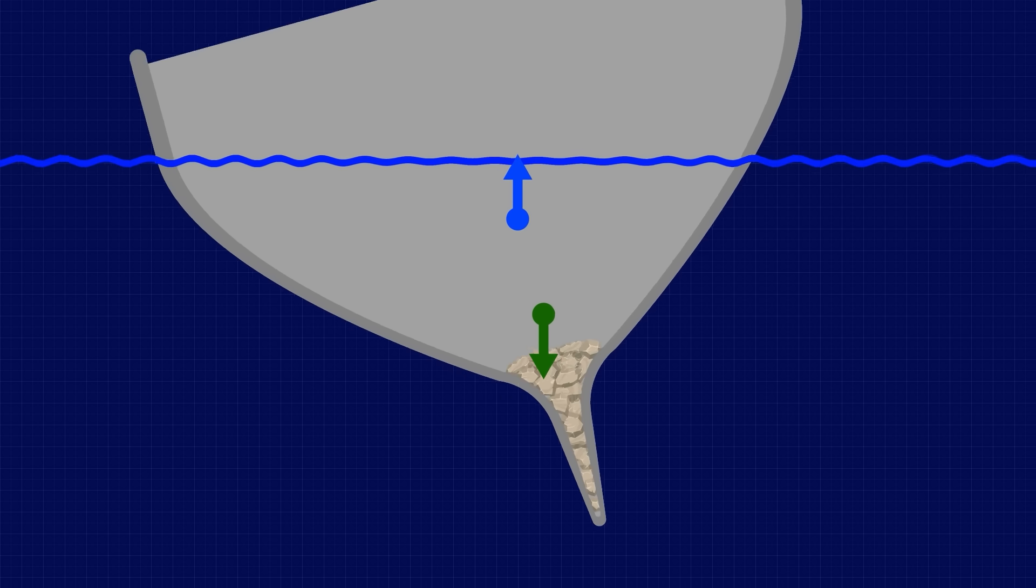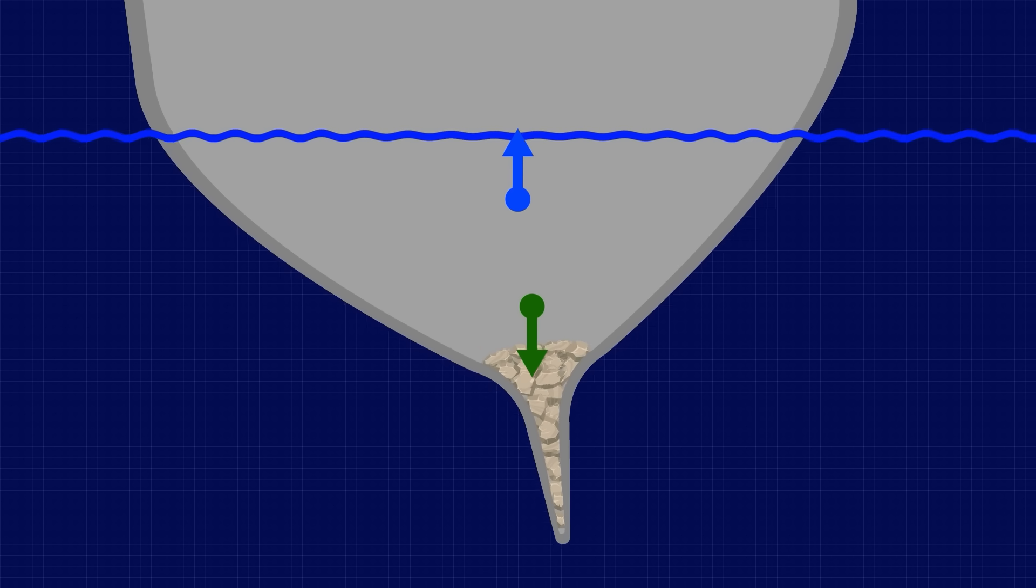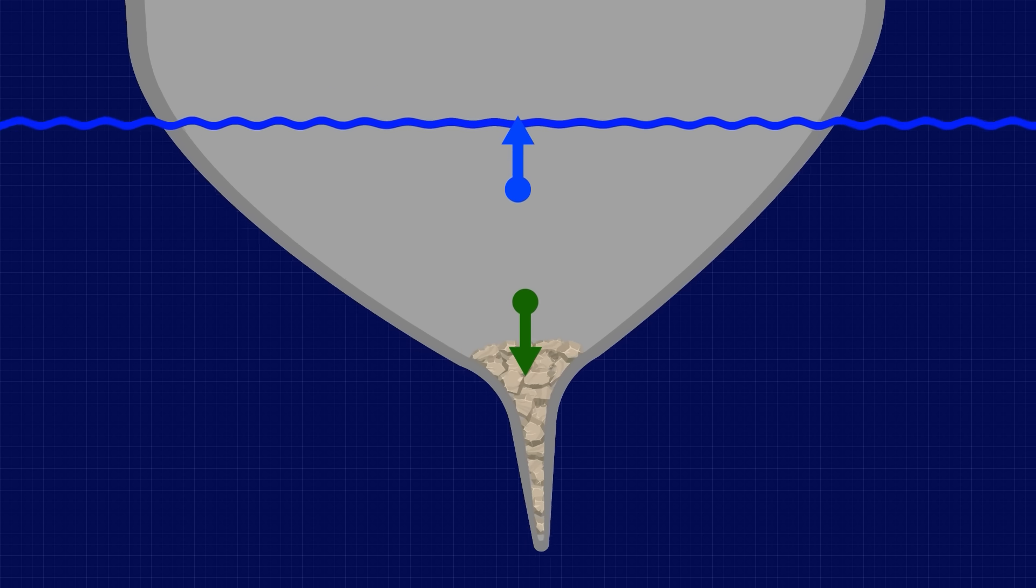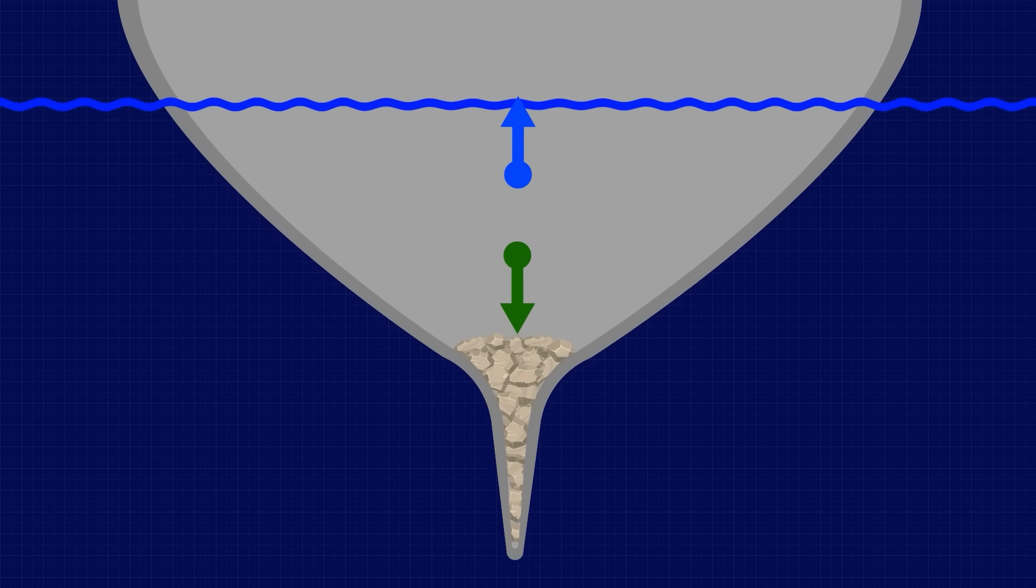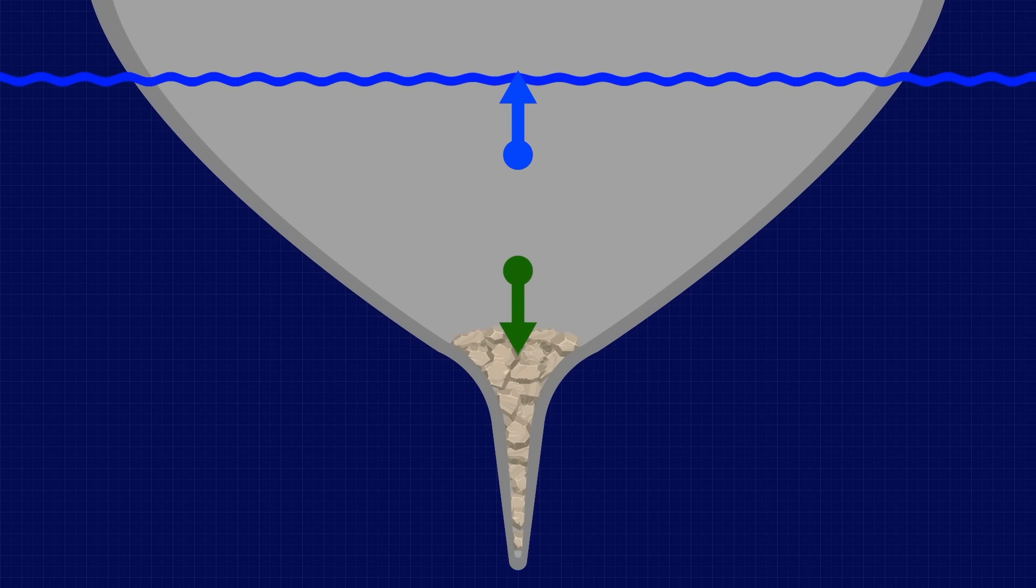The force of buoyancy acts through a point higher up than the force of gravity, effectively creating a bit of a dangling effect, continuously acting to keep the vessel upright. As long as you keep the centre of gravity below the centre of buoyancy it will be impossible to capsize the vessel.